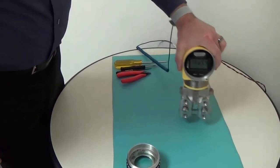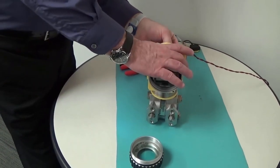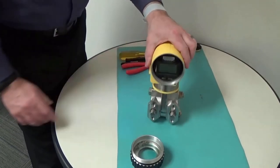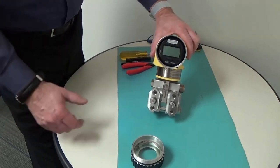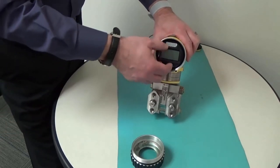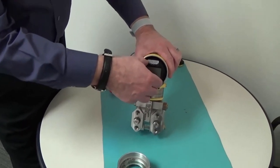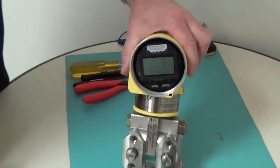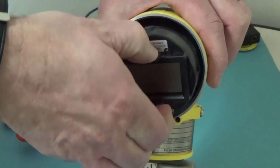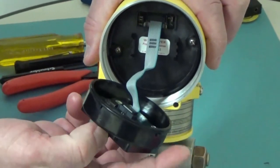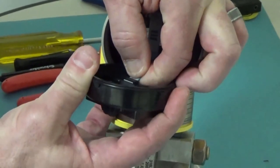The first step is to power down the transmitter in this particular case. I'll just remove the power and then the way to get into the unit to gain access to where the battery is is to remove the display. That can be done by just rotating the display slightly in the counterclockwise direction. There is a ribbon cable that's attached to it and so we can gently unplug the ribbon cable from the back of the display.